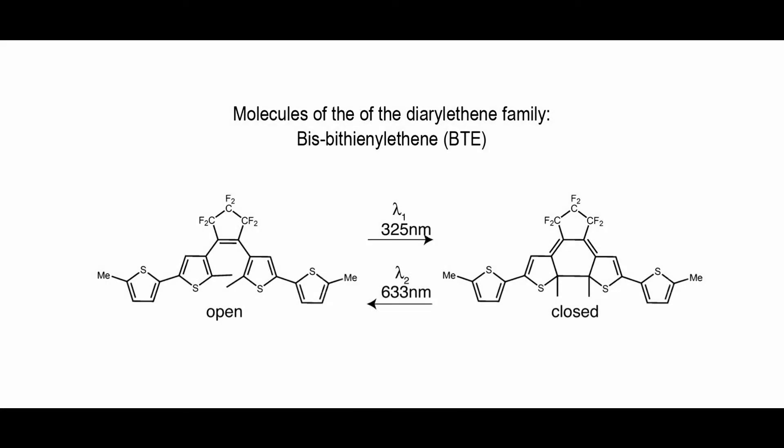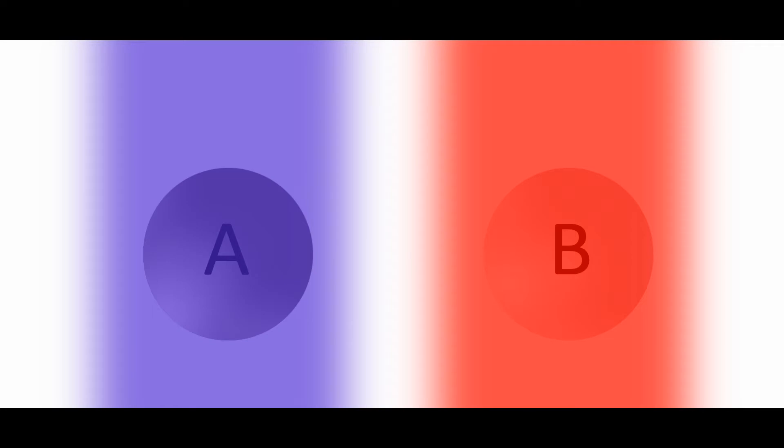In this technique, we use a photochromic molecule that can switch states between two forms. Suppose the two states are A and B. When we shine UV light on A and red light on B, they interchange their states. Also, A is opaque and B is transparent.